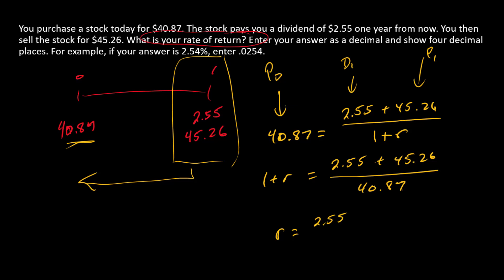And solving for r we have 2.55 plus 45.26 divided by the purchase price, and then we're going to subtract one from that number. So r here is equal to 16.98% or 0.1698.